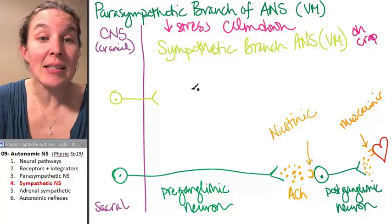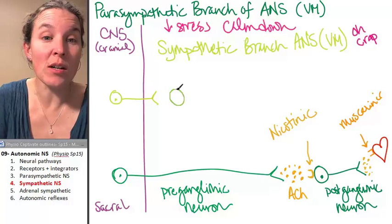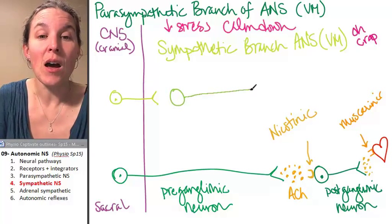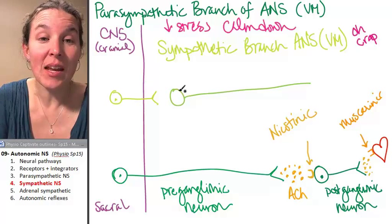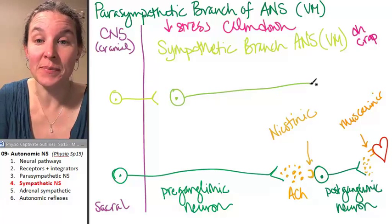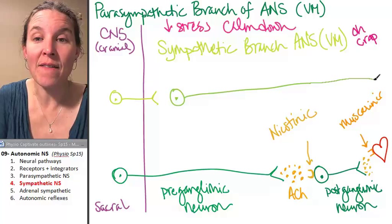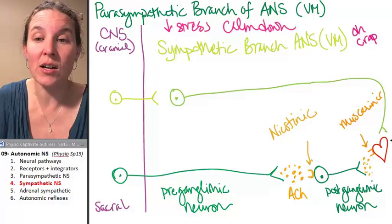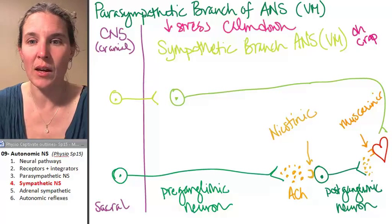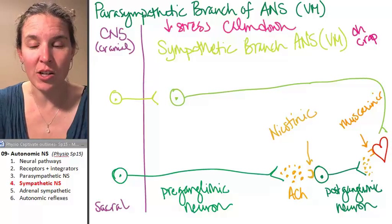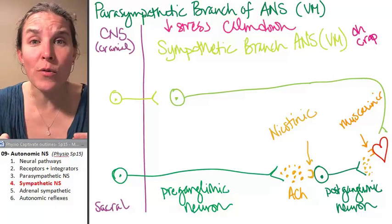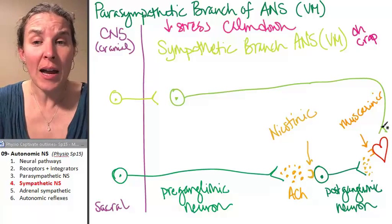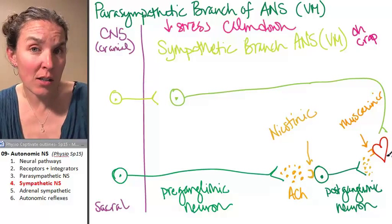Same as parasympathetic, we've got two neurons in a sequence. We have a preganglionic neuron and a postganglionic neuron. And we have the postganglionic neuron dumping something onto an effector. I drew these on the exact same page because the effector here is the heart.